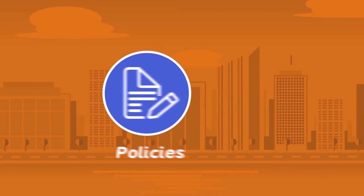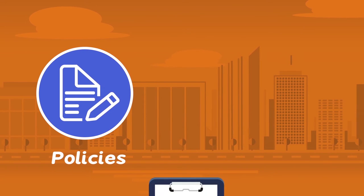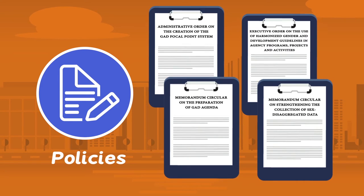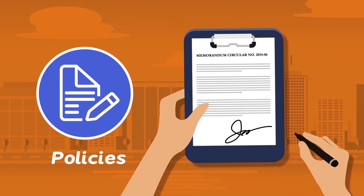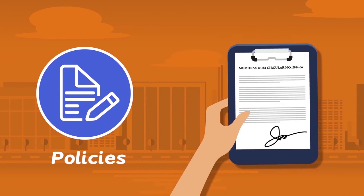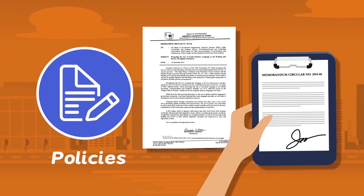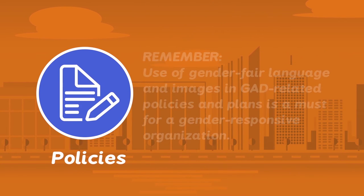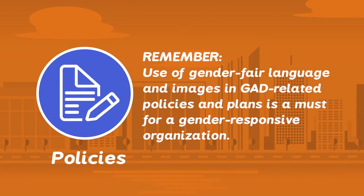The first entry point is Policies. It refers to the official statements and pronouncements of support for gender mainstreaming issued by the organization. Through these issuances, the organization shows its recognition and acceptance of gender equality as a critical and legitimate concern. Remember, use of gender fair language and images in GAD-related policies and plans is a must for a gender responsive organization.